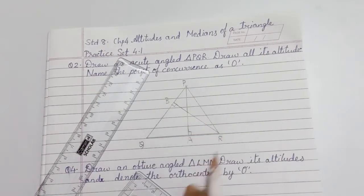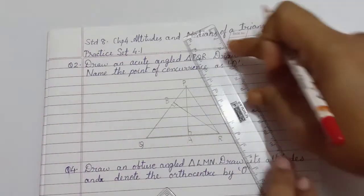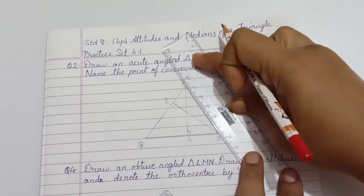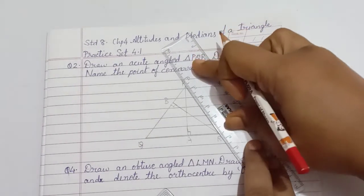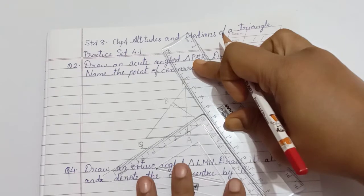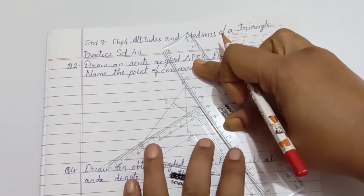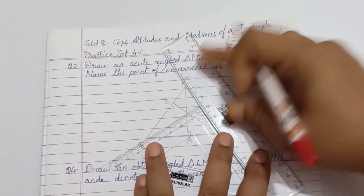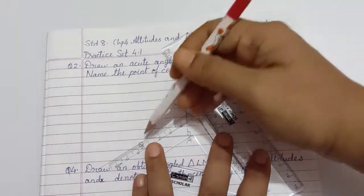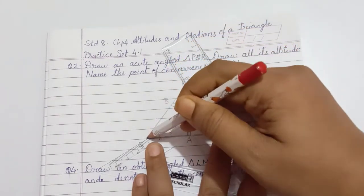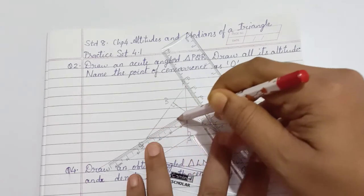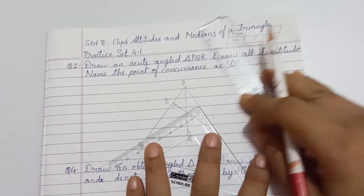Same procedure for the third side. Align the scale with side PR. Slide the set square till point Q. Hold the set square and scale. Drop the third altitude.